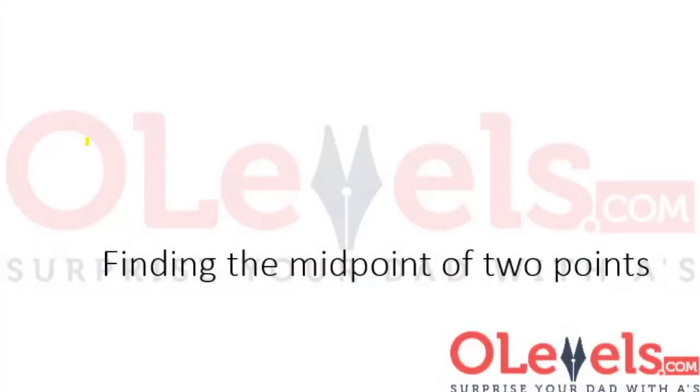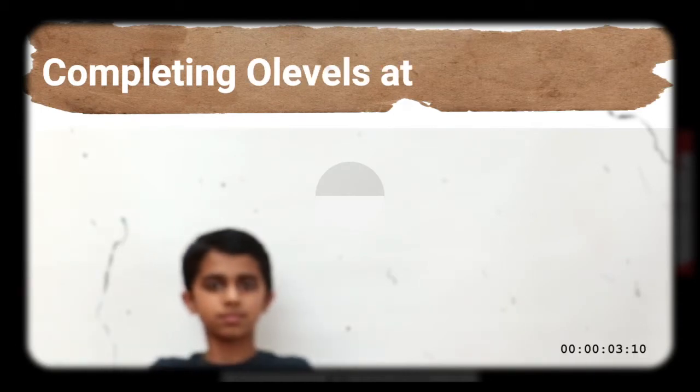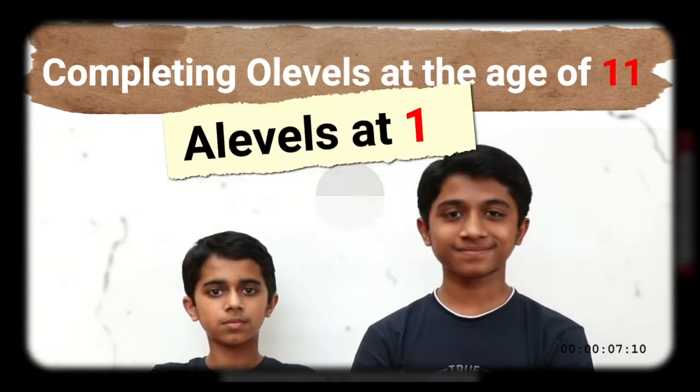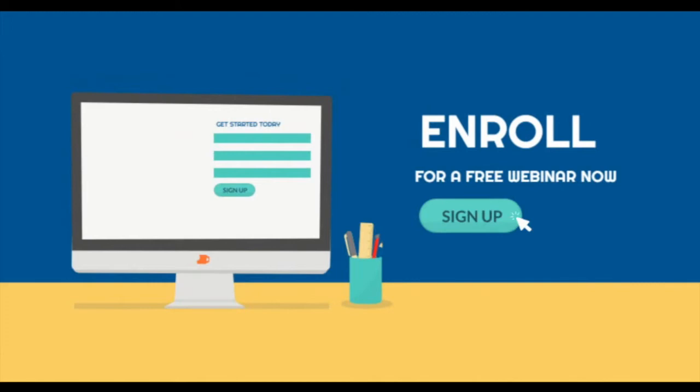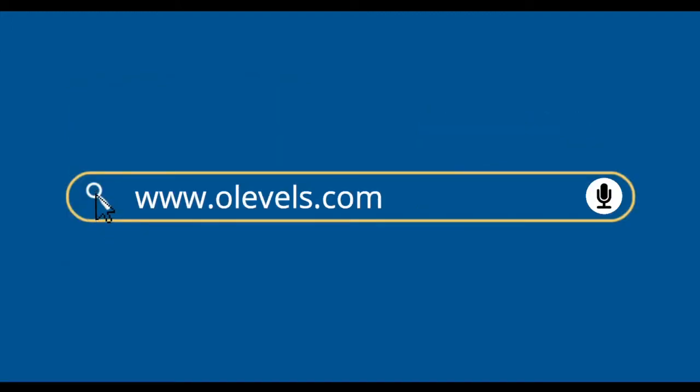Finding the midpoint of two points. Completing O levels at the age of 11 and A levels at 13. Don't make your kids ordinary, make them extraordinary. Enroll for a free webinar on olevels.com now.